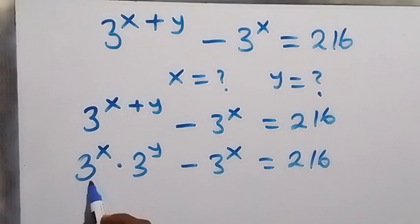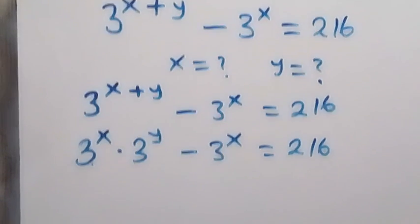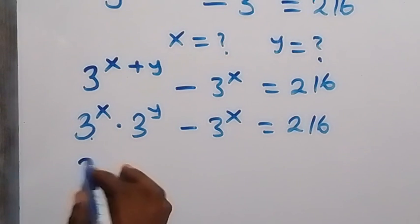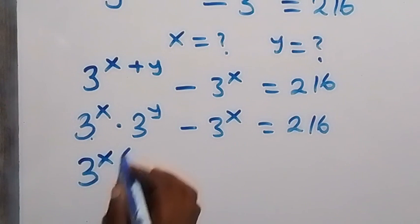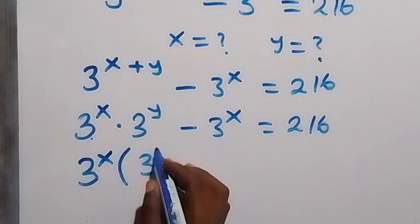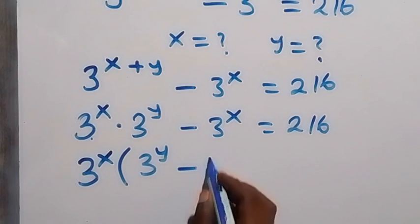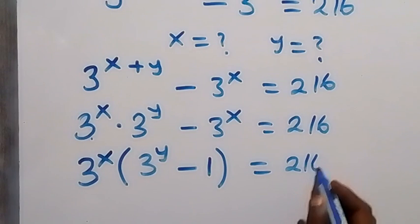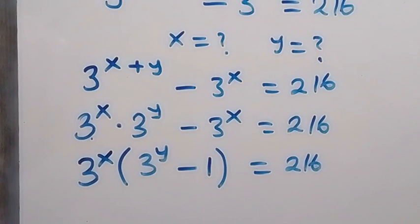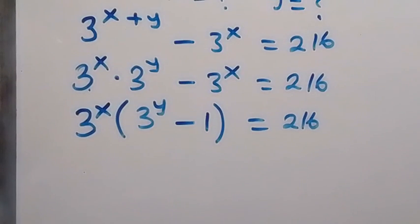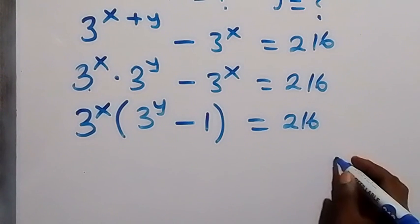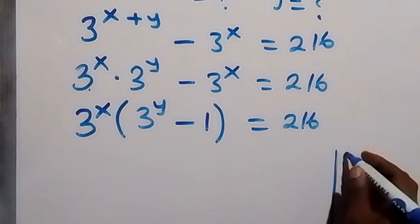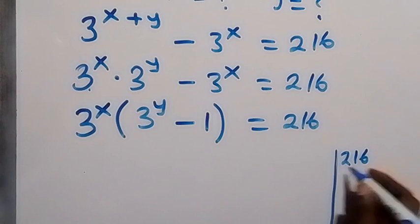We take out 3 raised to power x as a common factor. This gives us 3 raised to power x, multiplied by the bracket (3 raised to power y minus 1), which equals 216.